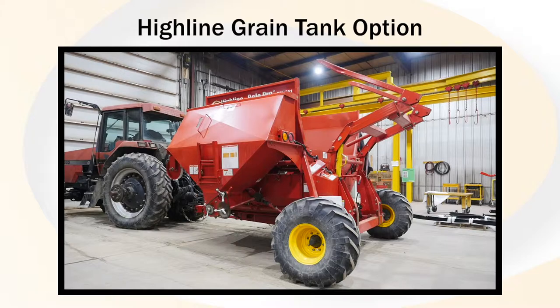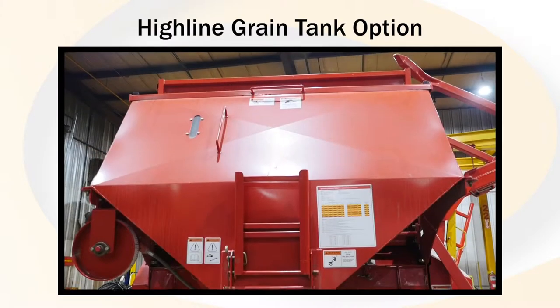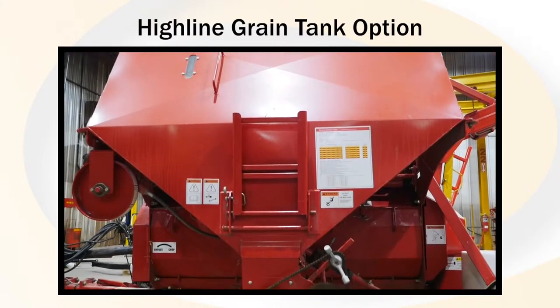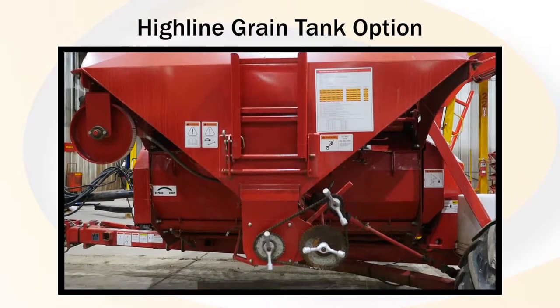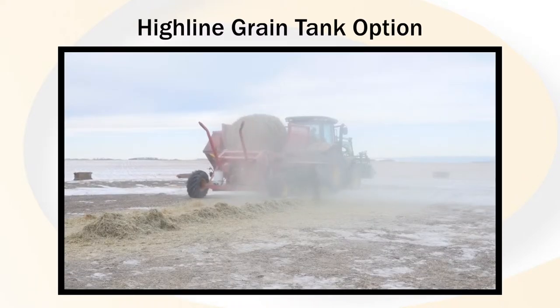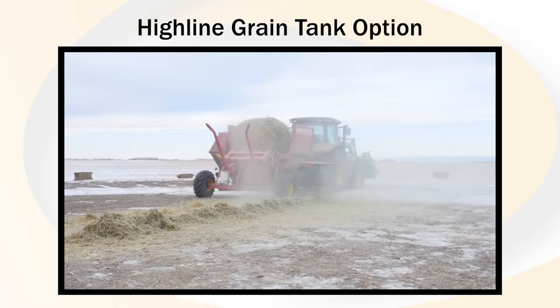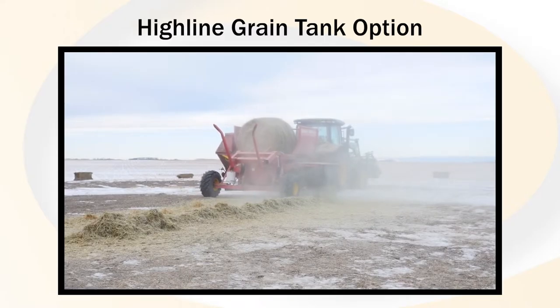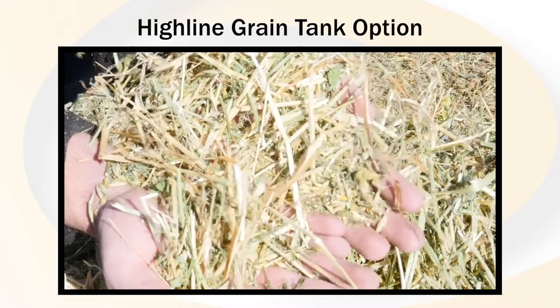To help complete a feed ration, Highline Manufacturing offers an optional grain tank attachment to adapt to your Highline CFR bale processor. This allows the user to use various types of grain and or pellets at a selected rate and blend directly with forage material.